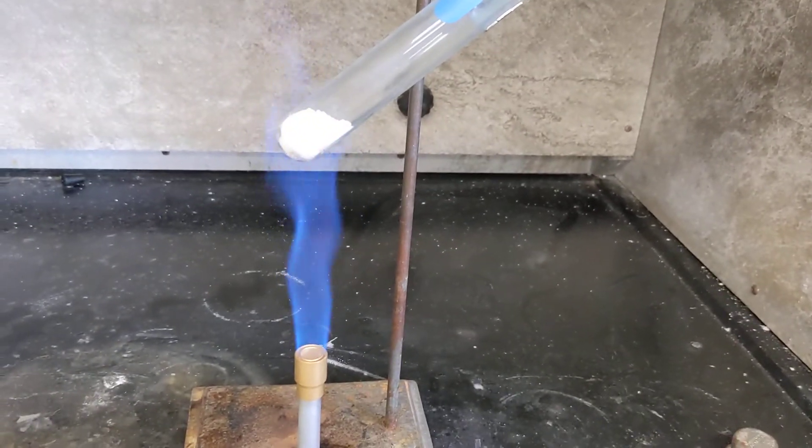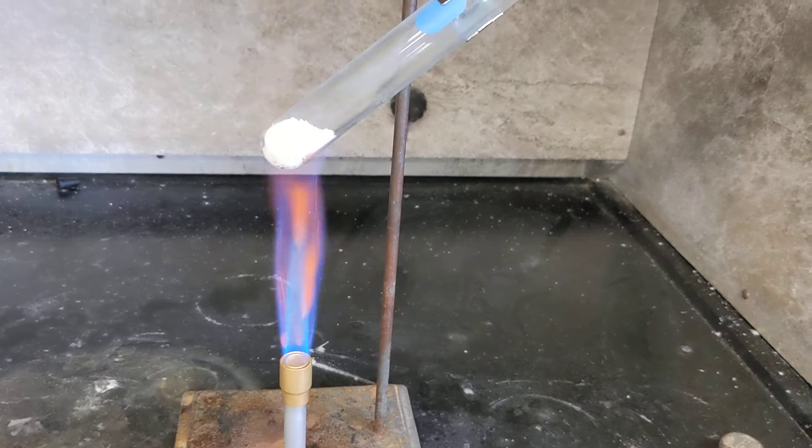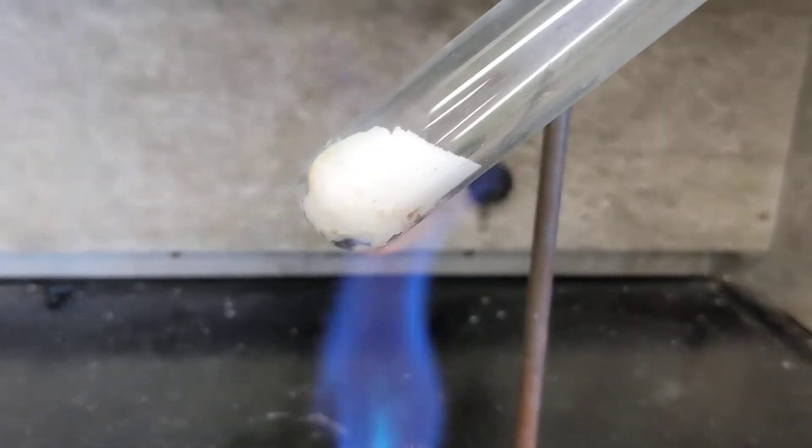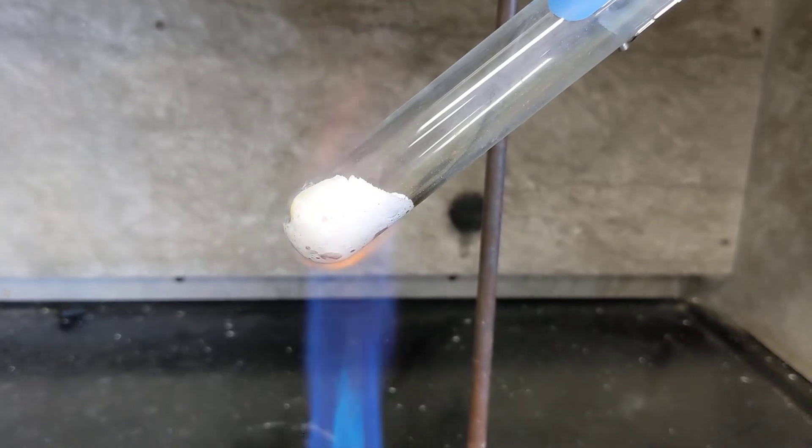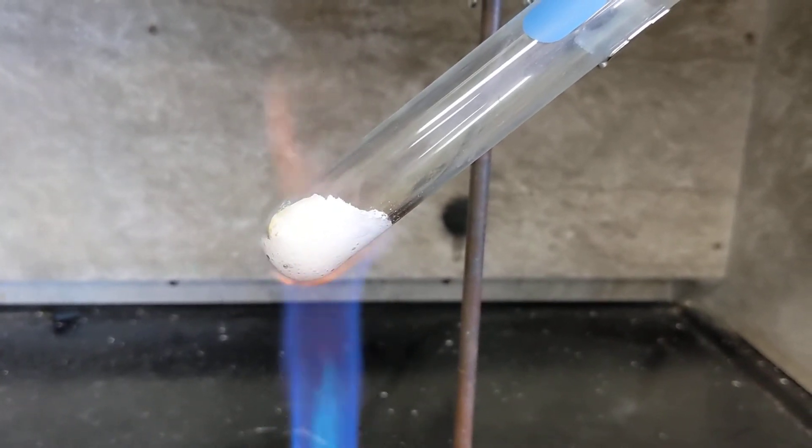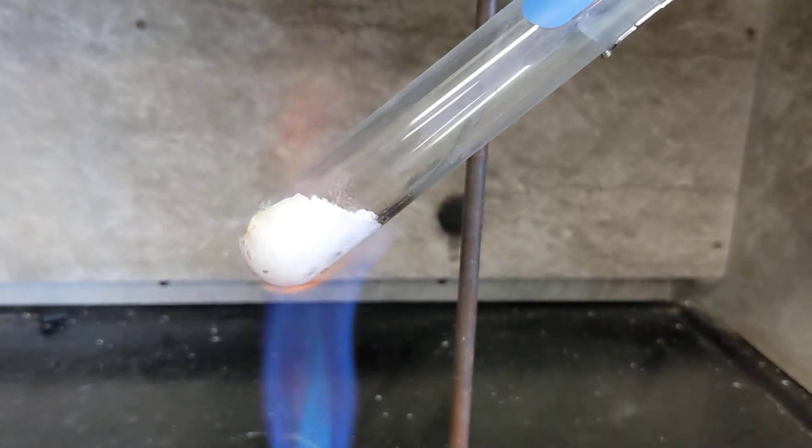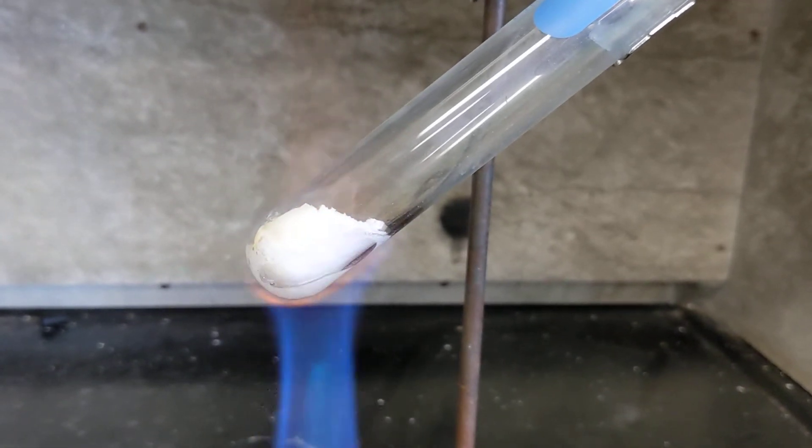So heat this up a little bit. You can see this starting to melt. So potassium chlorate contains a high mass percent of oxygen. So creating a lot of oxygen gas right now. Some of the bubbling that you see.